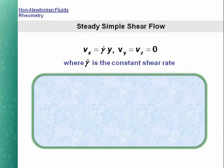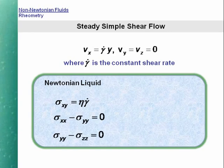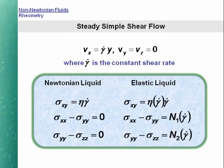We now consider in more detail the steady shear flow already referred to in connection with Newton's postulate. For a Newtonian liquid, the corresponding stress components have a simple form depending on one material constant, the coefficient of viscosity. The normal stress differences for a Newtonian liquid are both zero. For a non-Newtonian liquid, the relevant stress distribution can be more complex. We have already seen that the viscosity can depend on the rate of shear. We now concentrate on the normal stress differences, N1 and N2. These can sometimes be orders of magnitude higher than the shear stress, and they give rise to many interesting phenomena.